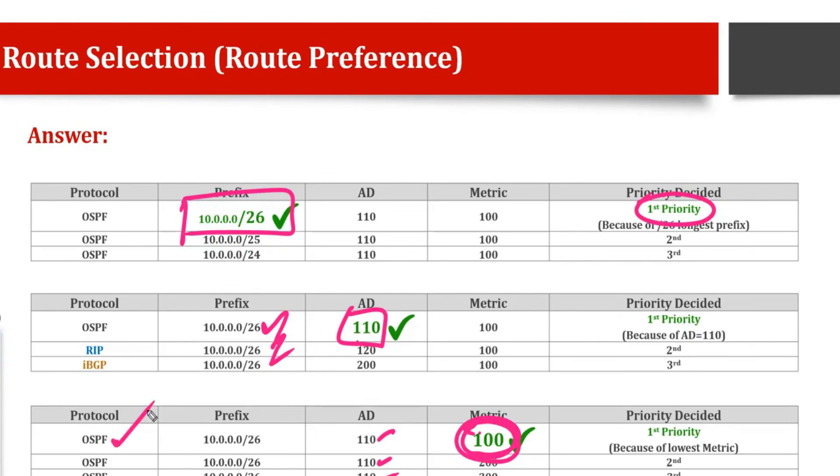If it is OSPF, the metric will be cost. If it is RIP protocol, so if these were all RIP, then it will check for the hop count, whichever will have the less hops.